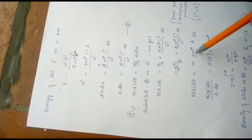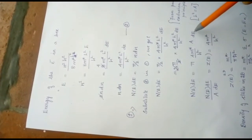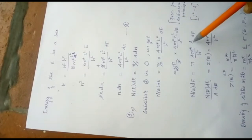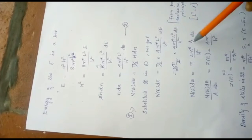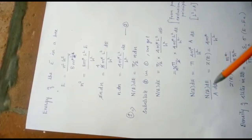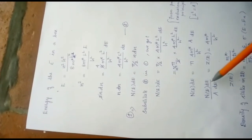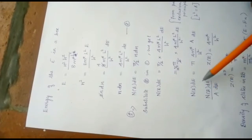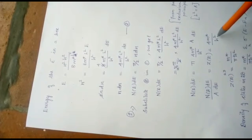So n of E dE is equal to pi into 4m star by h square. Then, a into dE, for L square I am putting a. a is area, length into breadth. So, n of E dE, then this a and dE comes to the denominator of the left hand side. So, we are going to write this term as a density of states. That is equal to 4m star by h square.